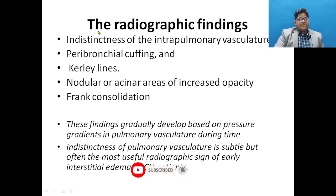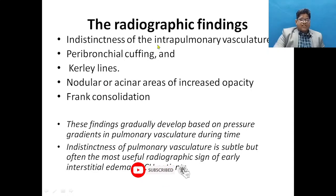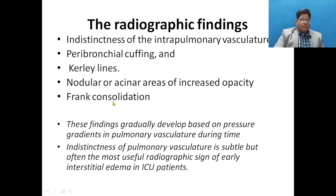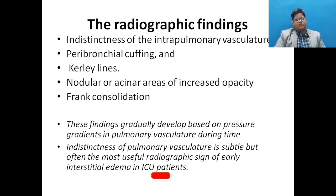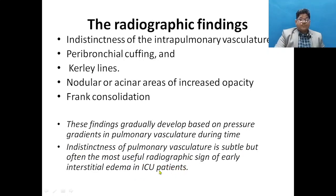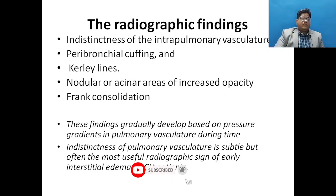Radiographic findings in a patient with hydrostatic pulmonary edema include: indistinctness of the intrapulmonary vasculature, peribronchial cuffing, curly lines, nodular or acinar areas of increased opacity, and fleeting consolidation. These findings develop over time depending on the pressure gradient in the pulmonary vasculature. Indistinctness of pulmonary vasculature is subtle but often the most useful radiographic sign of early interstitial edema in ICU patients.